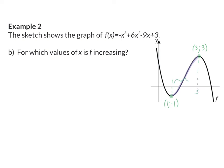These are all the values in between. To write this down, you now have an option of two different notations. You can write down that it is x element of the open interval (1, 3). Or you can say that x is in between one and three, and then you have to mention x is an element of real numbers.